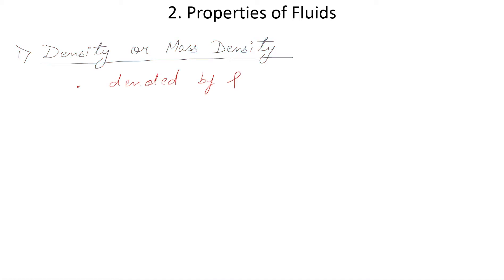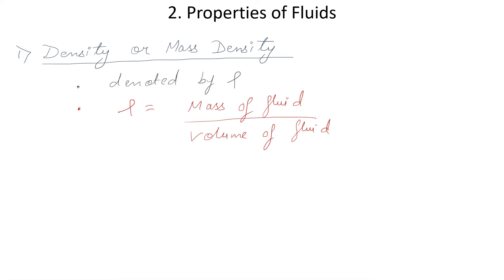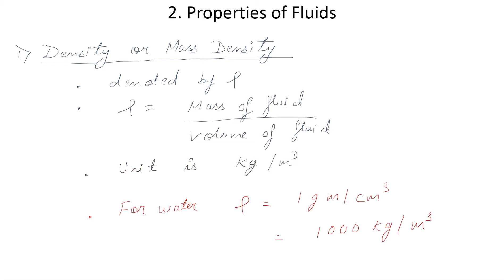The first property of fluid is density or mass density, denoted by the symbol rho (ρ). Mathematically, density is the ratio of mass of fluid to the volume of fluid. Its SI unit is kg per meter cube. For water, the value of density is taken as 1 gram per centimeter cube or 1000 kg per meter cube.